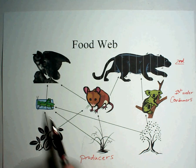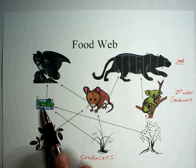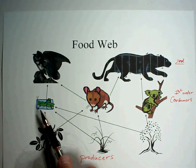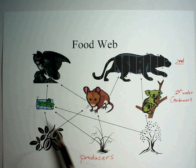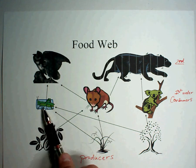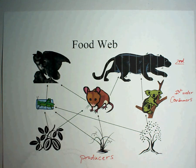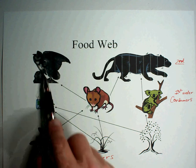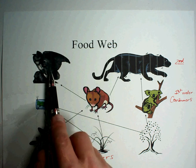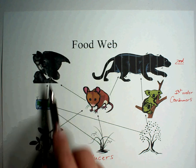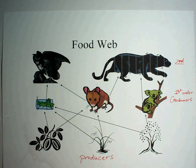The grass is eaten by the grasshopper, so energy passes there. Remember, only 10% of the energy of the plant is passed on, so the grasshopper has to eat a lot of grass to survive. Then the grasshopper can be eaten by an owl, but the owl won't be full with just one grasshopper — he has to eat a lot. Only 10% is passed on to the next level.